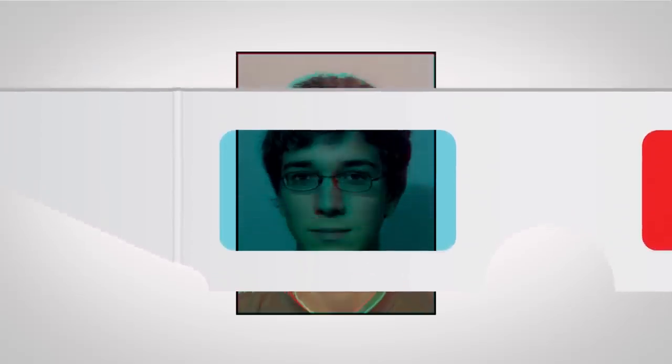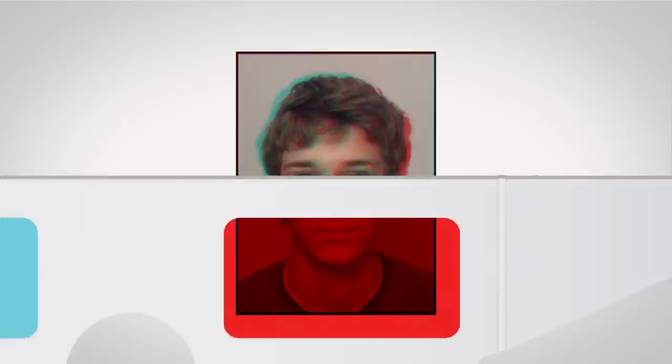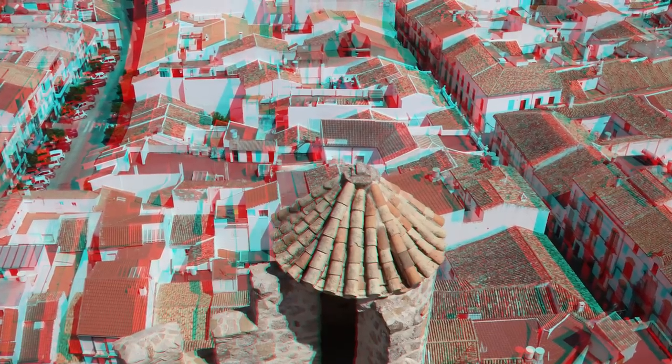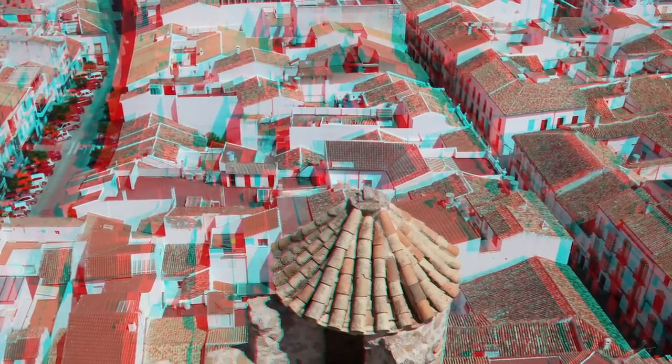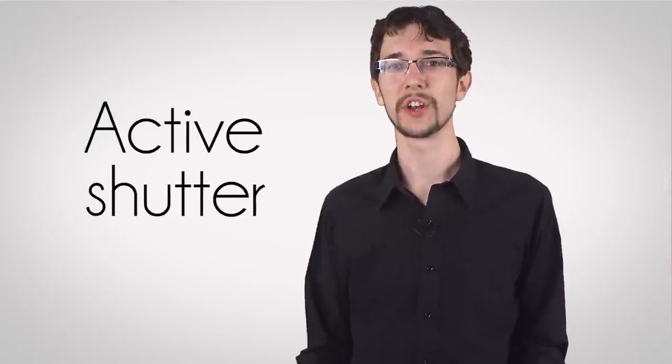With these glasses, the cyan lens can only see the red image, and the red lens can only see the cyan image. This method is really simple, and it doesn't need anything special to work aside from the cheap glasses. However, because color is used to distinguish between the two images, the actual perceived colors of the final image don't look very good. Our next 3D method is called active shutter.